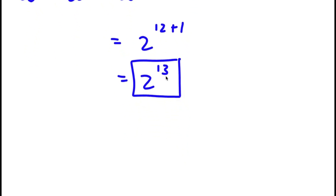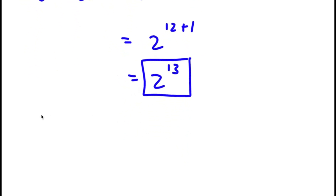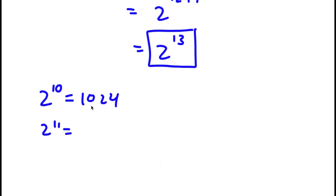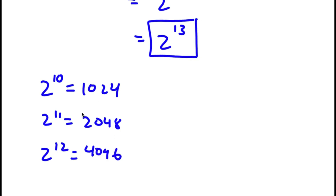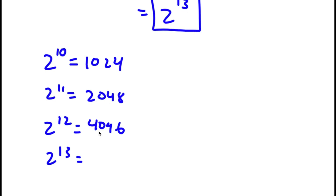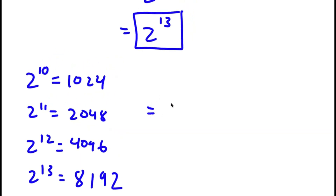Now I'm going to simplify it. We know 2 to the power of 10 is 1,024. So 2 to the power of 11 is double that, which is 2,048. And 2 to the power of 12 is double of 2,048, which is 4,096. So 2 to the power of 13 is double of 4,096, which is 8,192. So 8,192 is my answer.